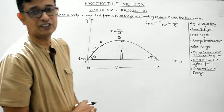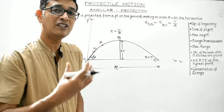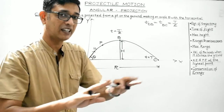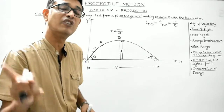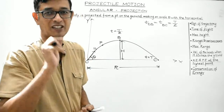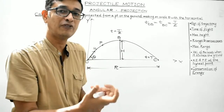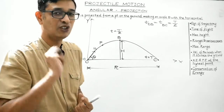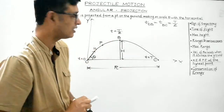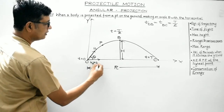A projectile is anybody thrown in air or space whose motion is only under the influence of gravity. It possesses two independent motions: horizontal motion and vertical motion. Horizontal motion is covered with uniform velocity because along the horizontal direction, no net force acts on the body. So net acceleration along the horizontal is zero, and if we resolve u into two components, the horizontal component is ux = u cosθ.